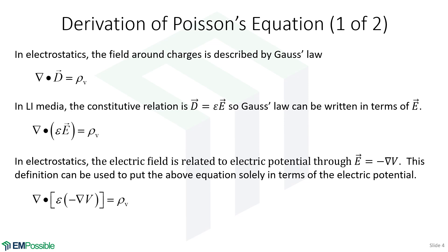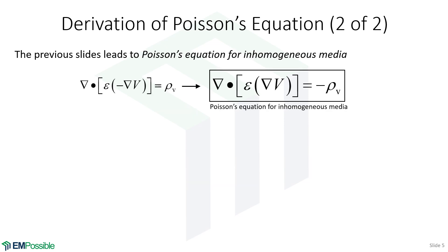In electrostatics, we like to solve scalar differential equations instead of vector equations. Remember that the electric field intensity is related to the electric potential through this negative gradient. So we replace the electric field intensity with the negative gradient of the electric potential. All we do is bring the negative sign over to the right-hand side of the equation, and we arrive at Poisson's equation for inhomogeneous media.